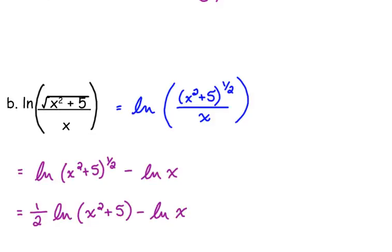This is where people like to get a little too happy with the expanding. A lot of times people will want to split this into the natural log of x squared plus the natural log of 5. You can't — that is not the rule. The rule says that if you're multiplying two things inside of a logarithm, you can split them apart. Not if you're adding two things. The logarithm of a sum is not the sum of two logarithms. The logarithm of a product is the sum of two logarithms. So don't get too happy with that.